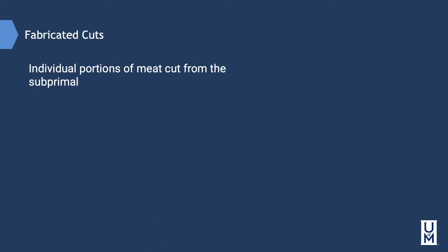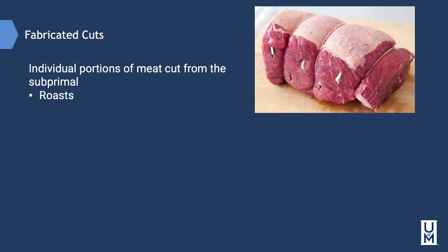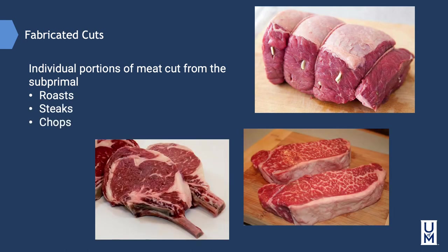We've used the term fabricated cuts several times — these are individual portions of meat cut from the subprimals. The hierarchy goes from the whole carcass, to the half or side, to the quarters, to the primals, to the subprimals, and finally to the fabricated cuts. The fabricated cuts are what you would see on your plate when sent out to a customer, and include things such as roasts, steaks, and chops.